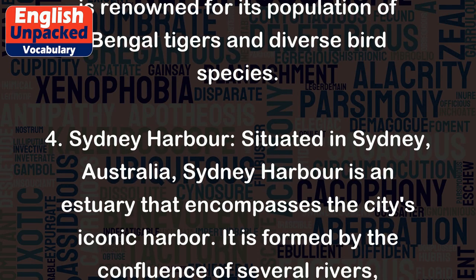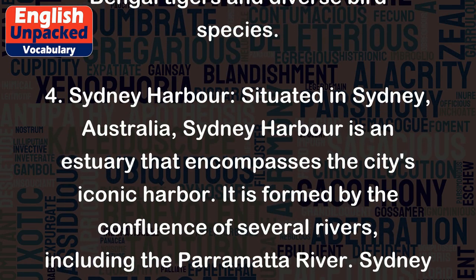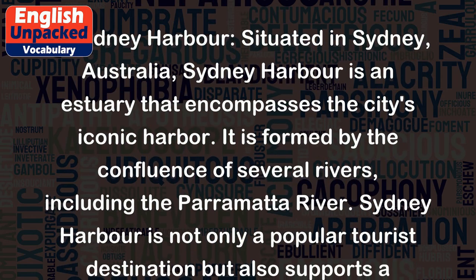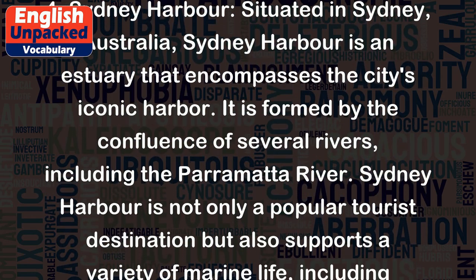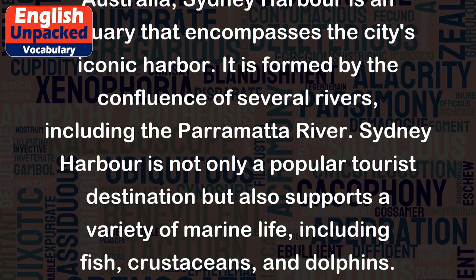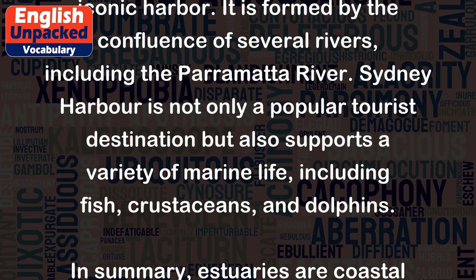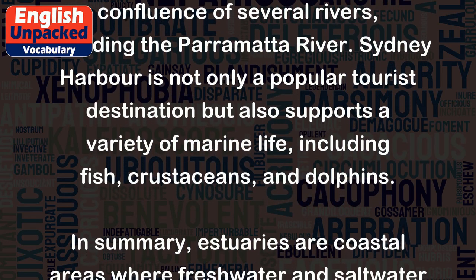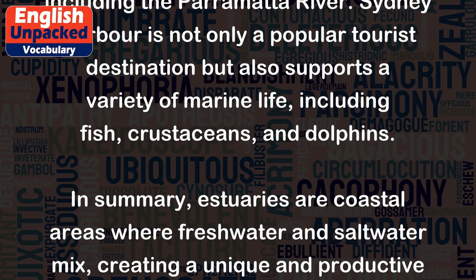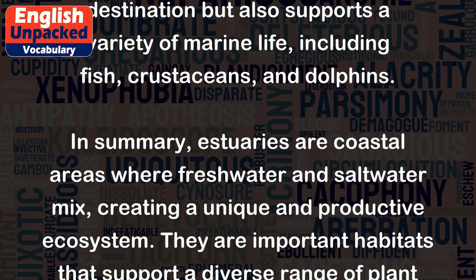4. Sydney Harbour — situated in Sydney, Australia, Sydney Harbour is an estuary that encompasses the city's iconic harbour. It is formed by the confluence of several rivers, including the Parramatta River. Sydney Harbour is not only a popular tourist destination but also supports a variety of marine life, including fish, crustaceans, and dolphins.